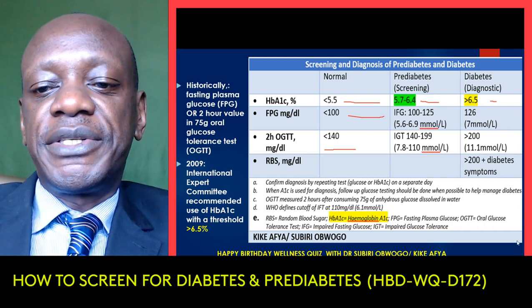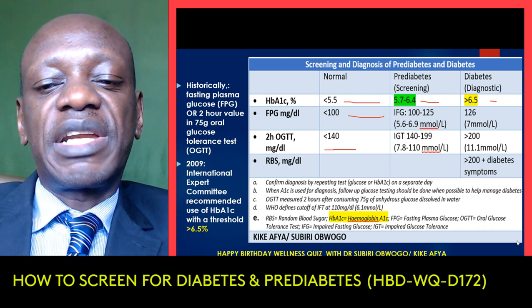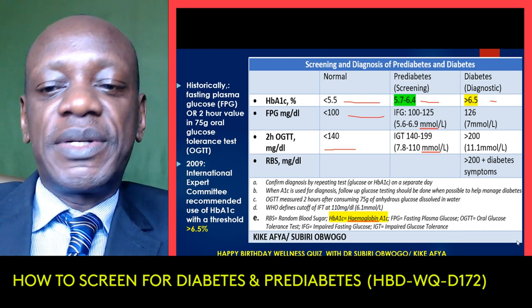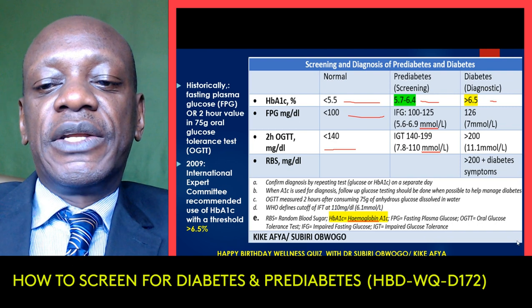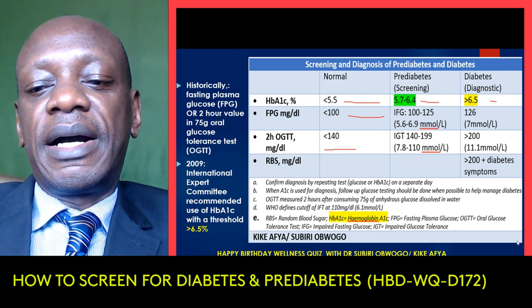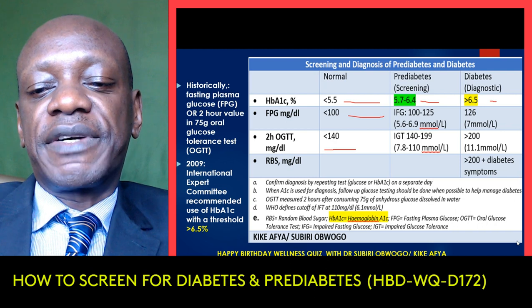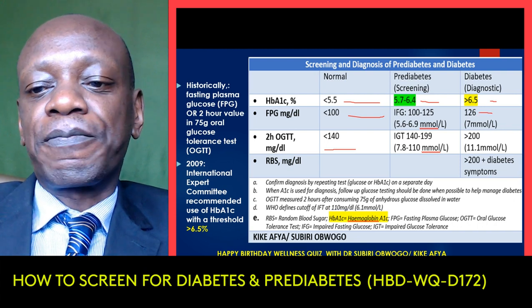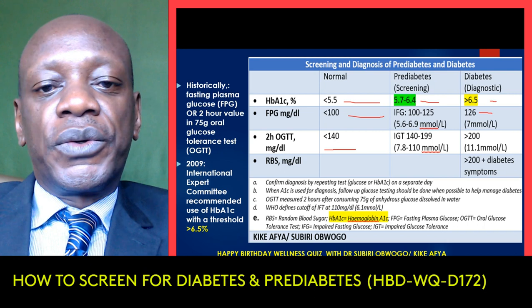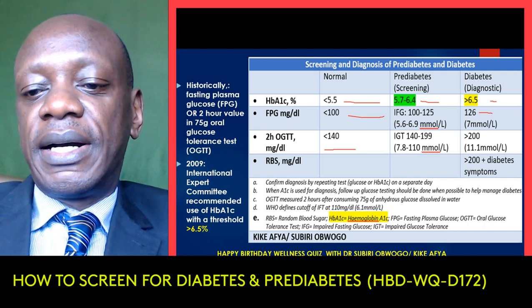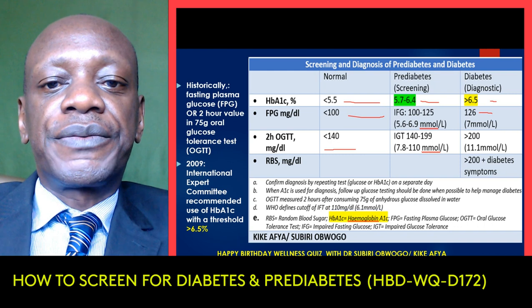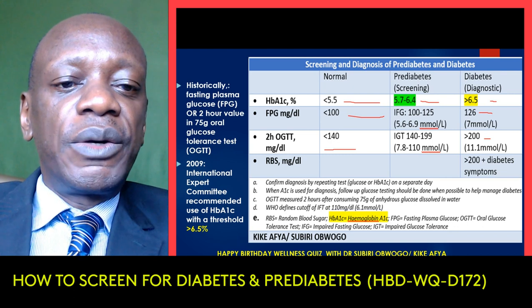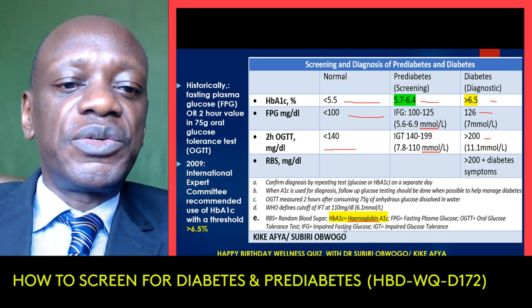A1c basically refers to the sugar coating on red blood cells — if the red blood cells are floating in a high-sugar environment, then A1c is likely to be high. Specifically, diabetes is also diagnosed if you have a fasting overnight plasma glucose of 126 milligrams per deciliter or higher, or an oral glucose tolerance test result above 200 mg per deciliter — that's considered diabetic. So remember, if you have the risk factors, you can go for a lab test to confirm the diagnosis.